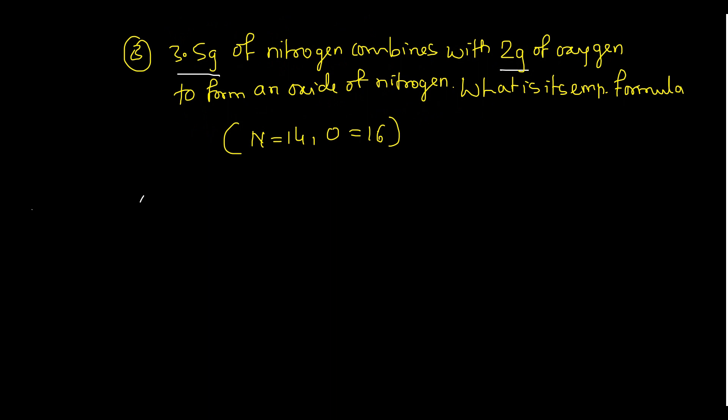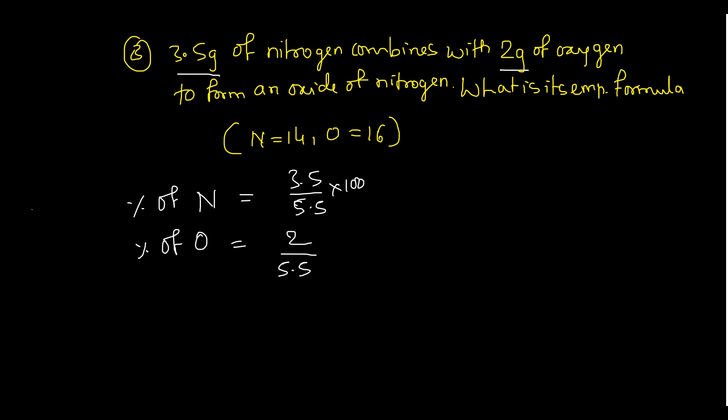Another question: 3.5 g of nitrogen combines with 2 g of oxygen to form an oxide of nitrogen. Find its empirical formula. Total mass = 3.5 + 2 = 5.5 g. Percentage of nitrogen = (3.5 ÷ 5.5) × 100; percentage of oxygen = (2 ÷ 5.5) × 100. Then proceed with the usual table method to find the empirical formula. Answer: N₂O (dinitrogen oxide / nitrous oxide).